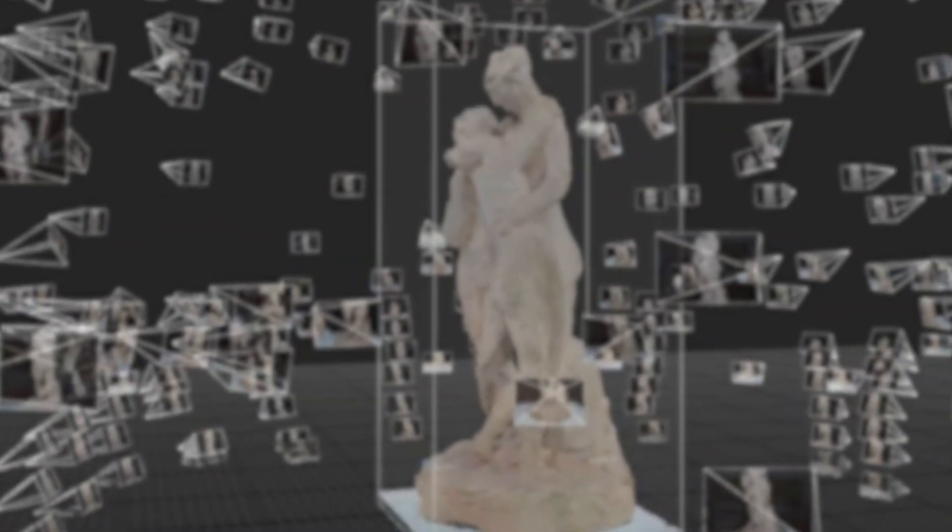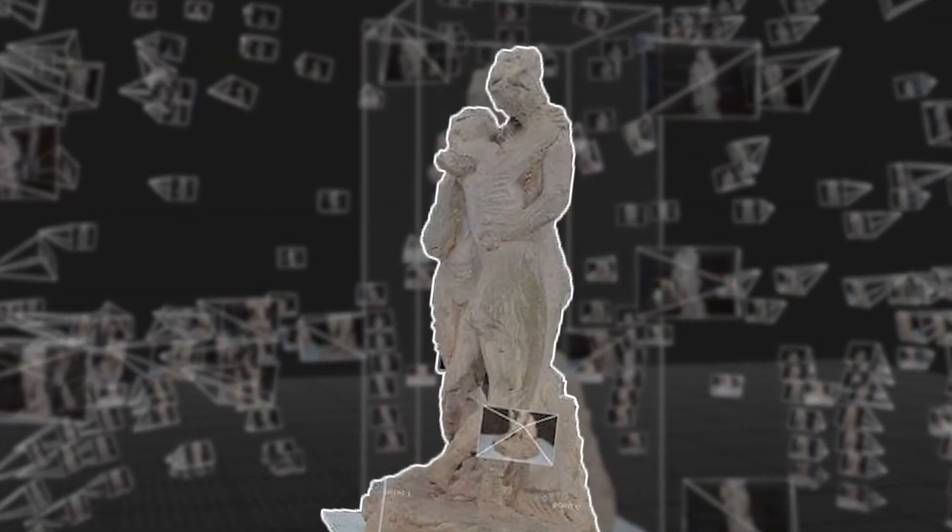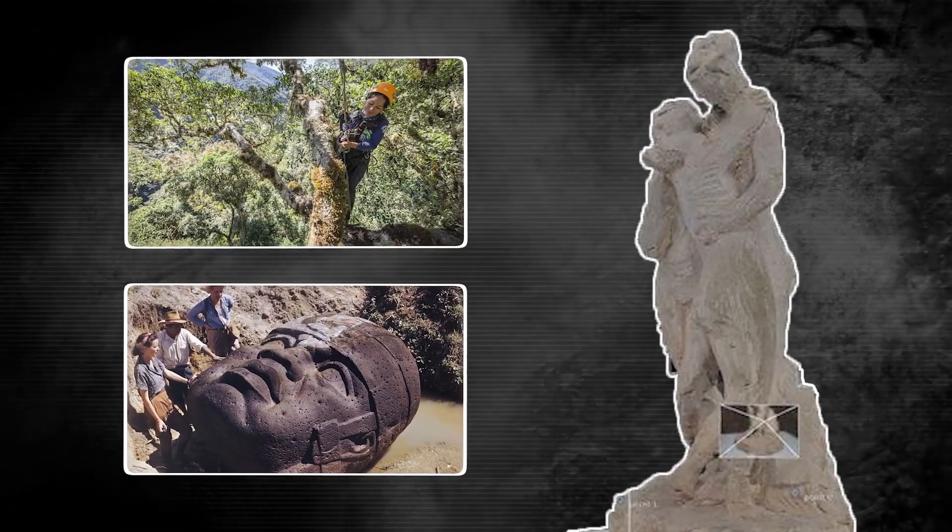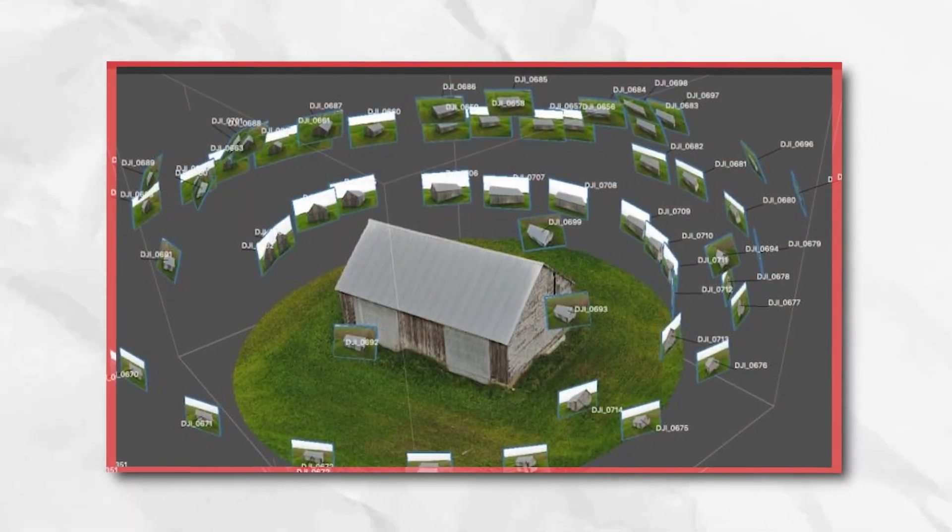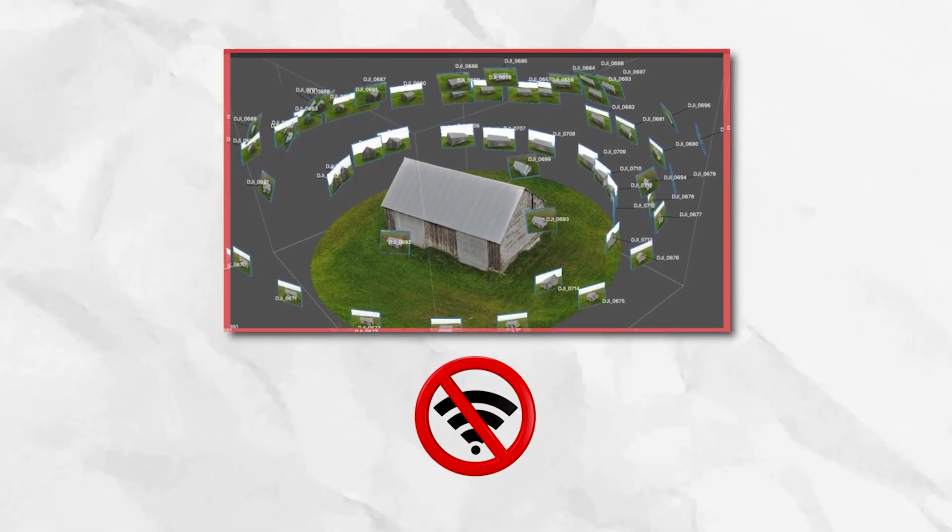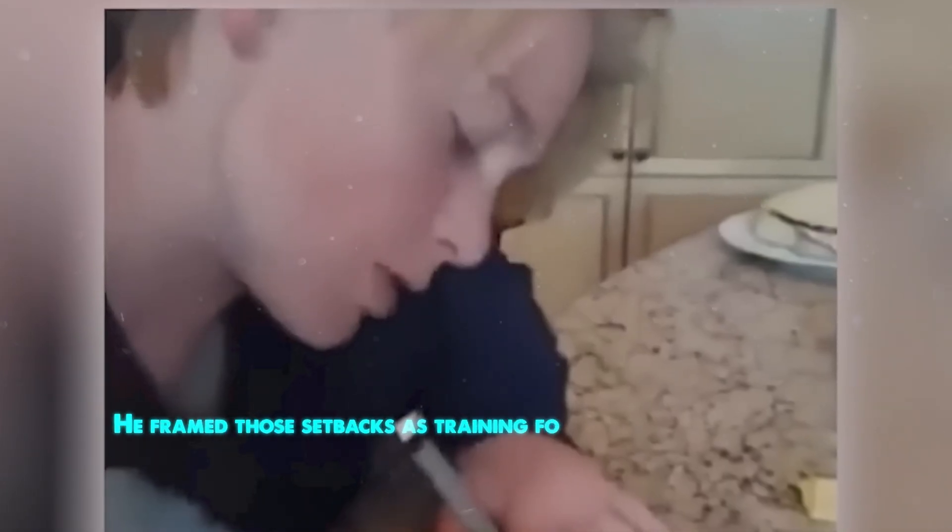They transformed thousands of photos of rock carvings into precise 3D models. The method is called photogrammetry. It's useful in archaeology and conservation. The project ran into simple issues: delayed gear, no WiFi at the campsite, heavy processing loads. He framed those setbacks as training for real scientific struggle.